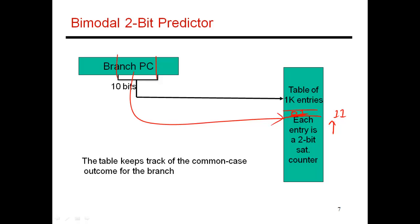So now I'm going to try and build on this model some more. I'm going to build what is called a correlating predictor. And there are two kinds of correlating predictors. One is called a global predictor, and one is called the local predictor. So let me focus on the global predictor in this video.